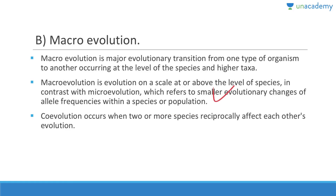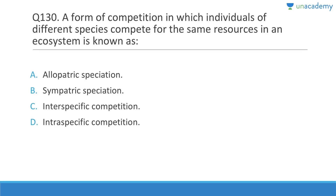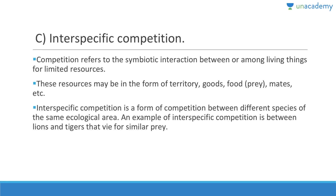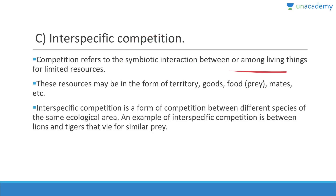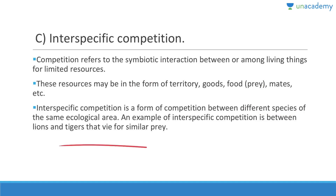A form of competition in which individuals of different species compete for the same resources in an ecosystem is called interspecific competition. Competition refers to symbiotic interaction among living things for limited resources — territory, food, mates, etc. An example includes lions, tigers, and cheetahs competing in the same ecological area.